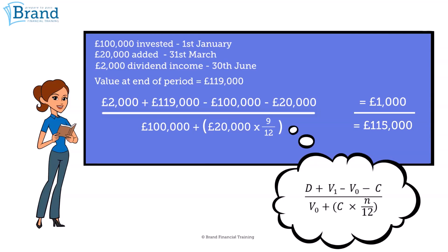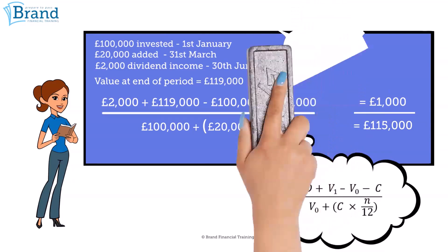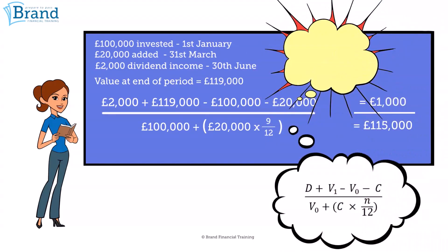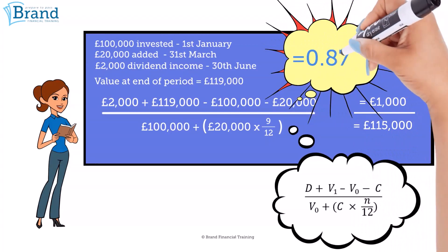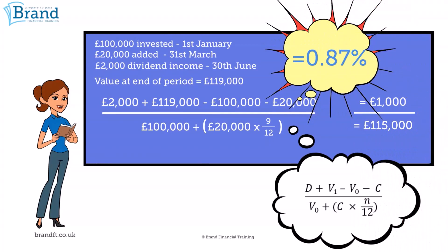If we then divide the top line by the bottom line, we have one thousand pounds divided by a hundred and fifteen thousand pounds, giving us 0.0087 rounded up. Multiply that by 100 to give an MWR of 0.87%.